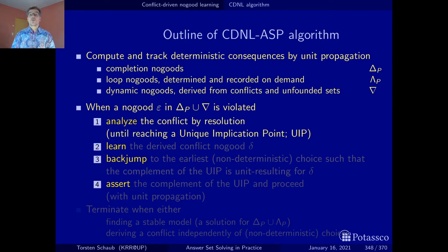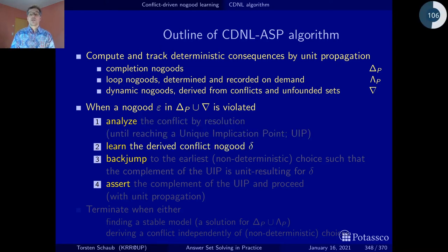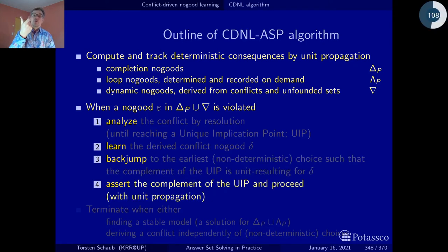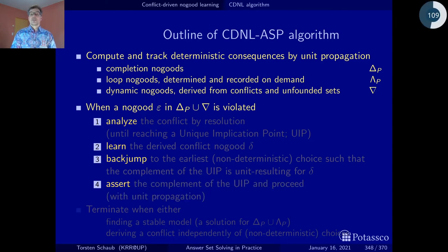Once we have found such a conflict no-good, we learn it — we add it to our dynamic no-goods — and then we back-jump to the earliest level where this no-good is still unit resulting, where it still yields the unit resulting literal. When we are there, we perform unit propagation and assert the unit resulting literal. These are the four steps we do whenever we encounter a conflict.